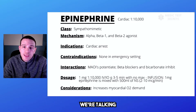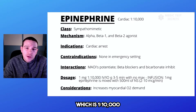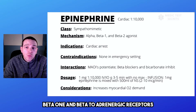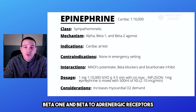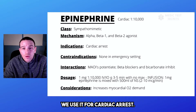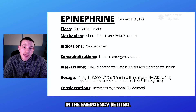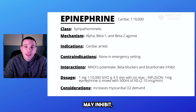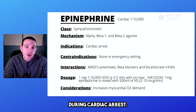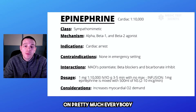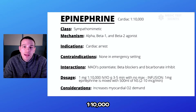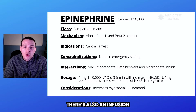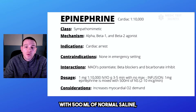Epinephrine — when talking about epi for ACLS, we're talking about the cardiac dose, which is 1 to 10,000. It is a sympathomimetic that acts on the alpha, beta-1, and beta-2 adrenergic receptors. We use it for cardiac arrest. There are no contraindications in the emergency setting. MAOIs may potentiate it and bicarbonate may inhibit it, but we don't really take that into consideration during cardiac arrest. The dosage is 1 milligram of 1 to 10,000 every 3 to 5 minutes with no max. There is also an infusion dose of 1 milligram mixed with 500 mL of normal saline, given at 2 to 10 micrograms per minute.